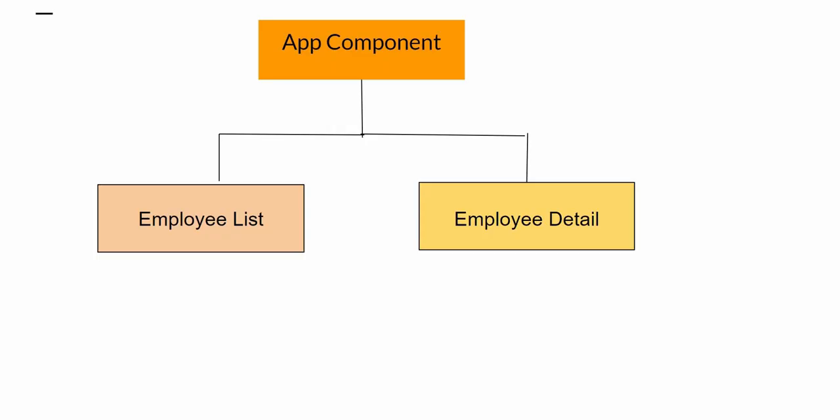Suppose we have a root component, that is the root component. Then we have the app component and two components — Employee List Component and Employee Detail Component. Suppose Employee List Component has some employee data, and Employee Detail also has employee details. If two components have the same data, it leads to duplicate data. You can add a central unit to access your data from one place.